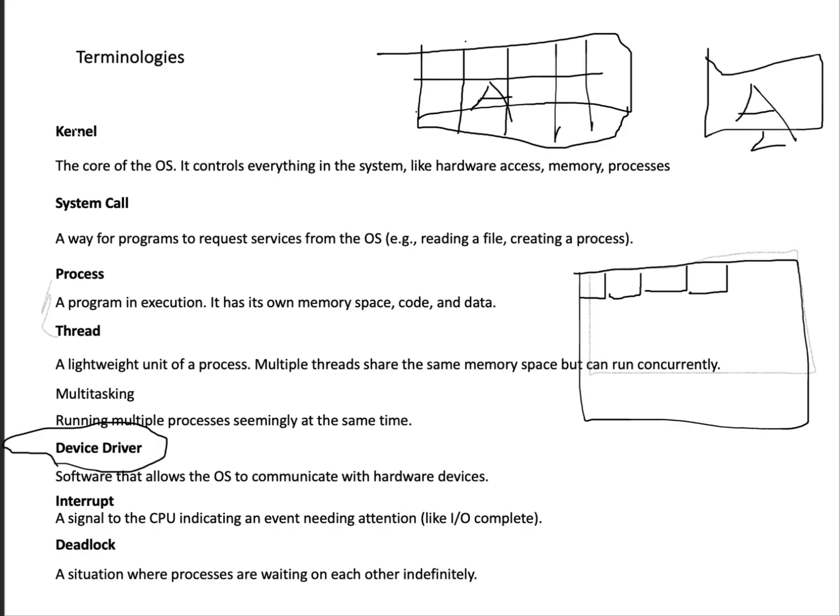We also have interrupts. An interrupt is a signal to the CPU indicating an event that needs attention. Think of it like studying and your mother calls you — she has interrupted you, so you have to stop what you're doing, attend to your mother's request, and then come back to what you were doing. That is how an interrupt works.